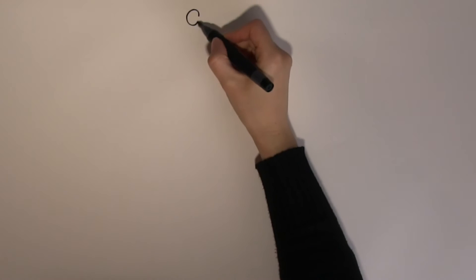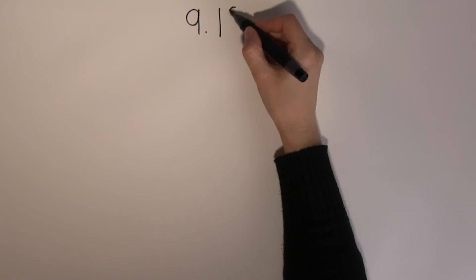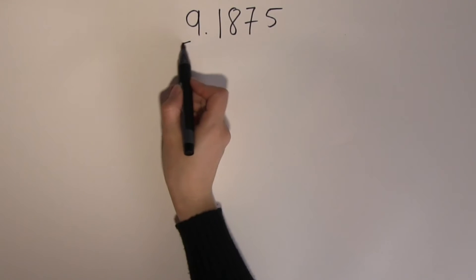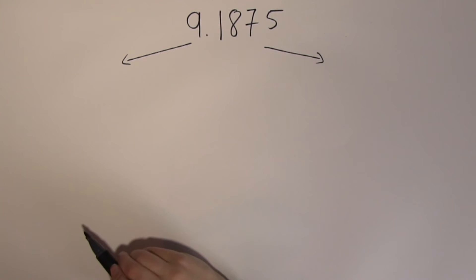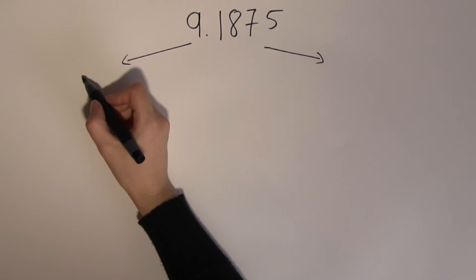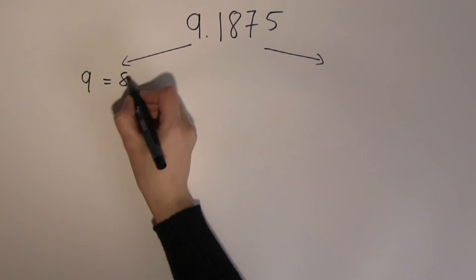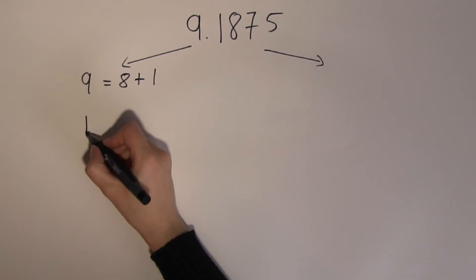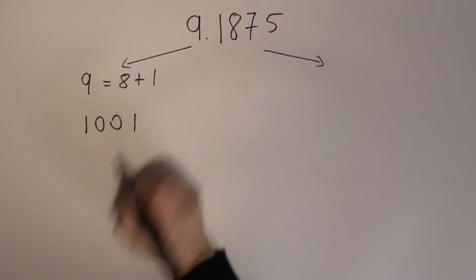The second example is 9.1875. Again, separate the number into whole and fractional parts. The whole part is 9, which is 8 plus 1, so: 8, no 4, no 2, and the 1 — giving 1001.